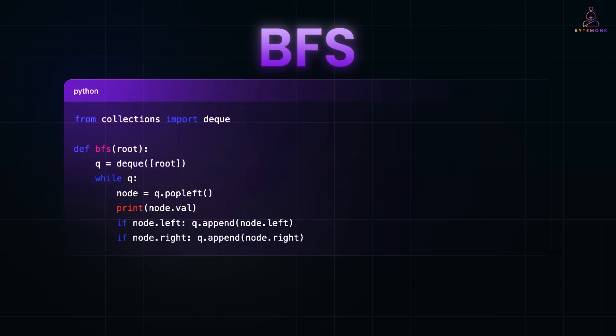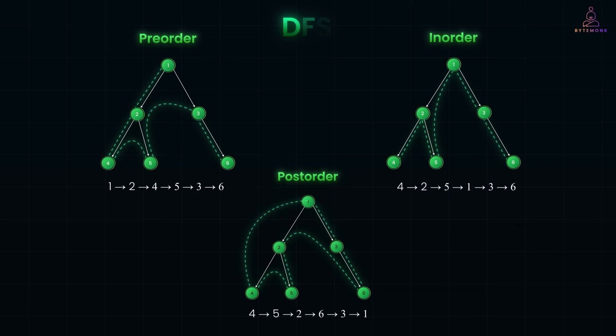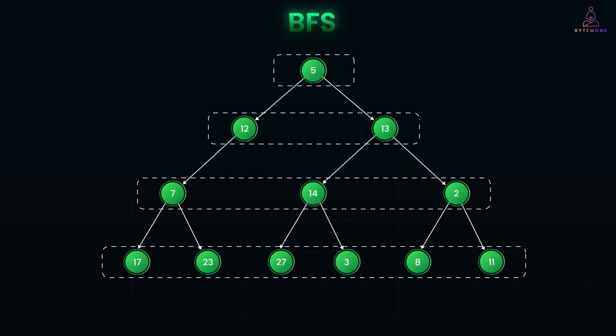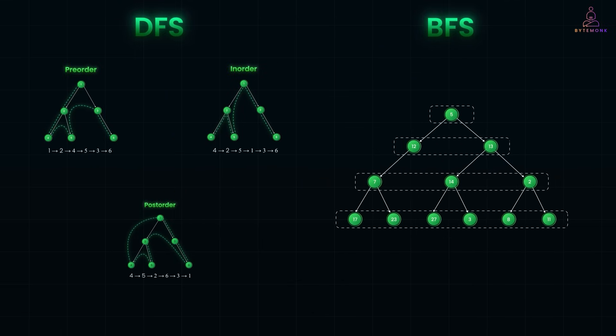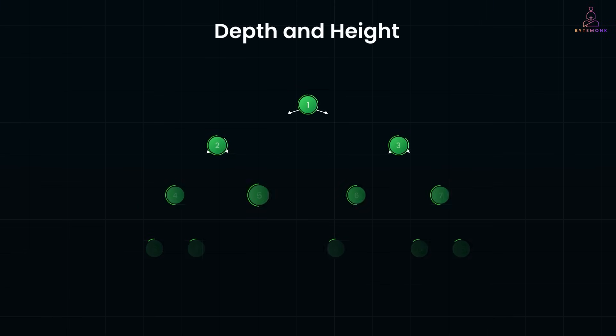Now, each traversal has its own use case. DFS explores depth, BFS explores breadth, and both help process nodes in different ways. Now, while traversing a tree, two important measurements often come up: depth and height.